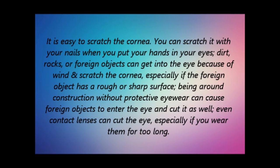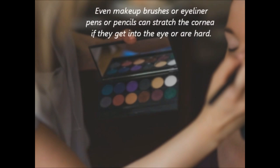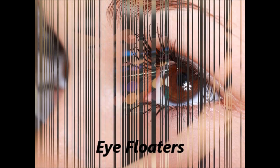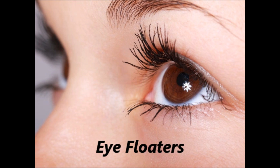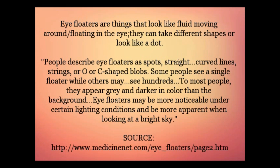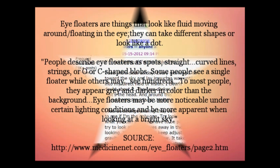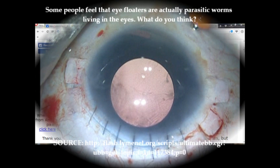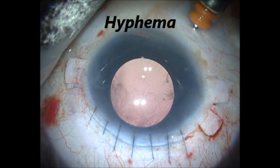Next, eye floaters. Eye floaters are things that look like fluid moving around in the eye. They can take different shapes or look like a dot. Some say that they look like clouds. For others they appear gray or darker in color. Some people actually feel that eye floaters are actually parasitic worms floating around in their eyes.